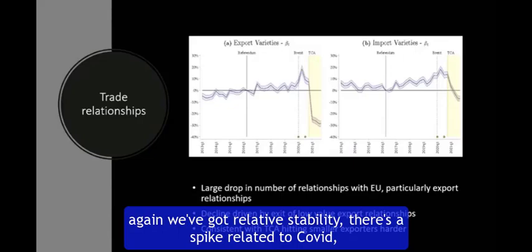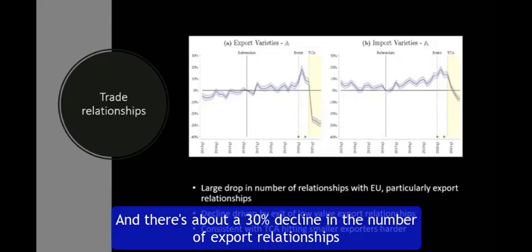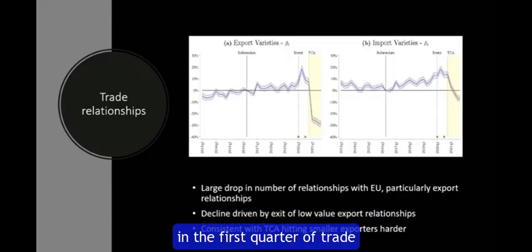There's a spike related to COVID, and then the TCA hits, and this thing really falls off a cliff. There's about a 30% decline in the number of export relationships in the first quarter of trade under the TCA.